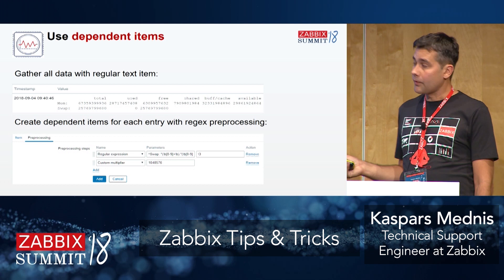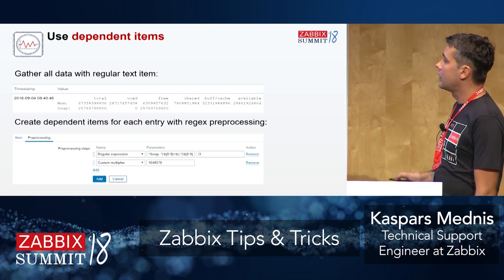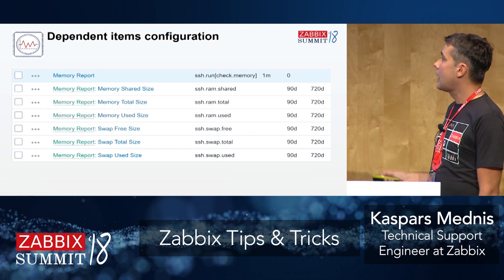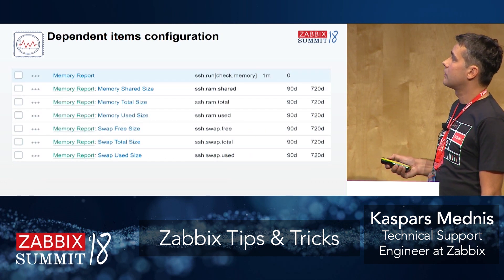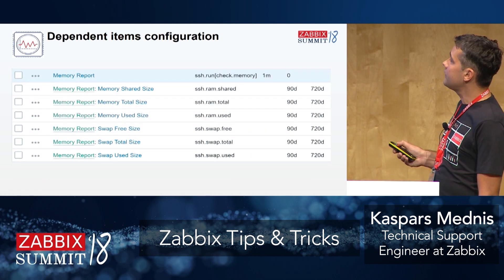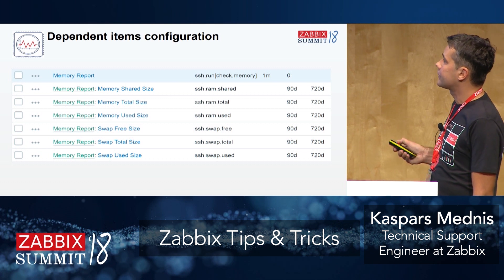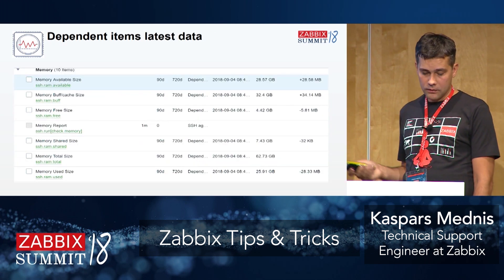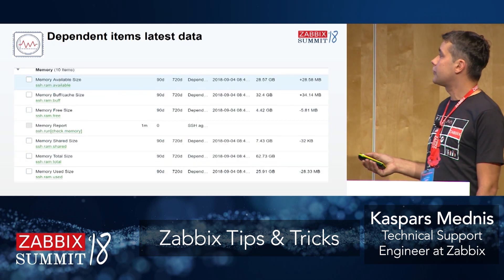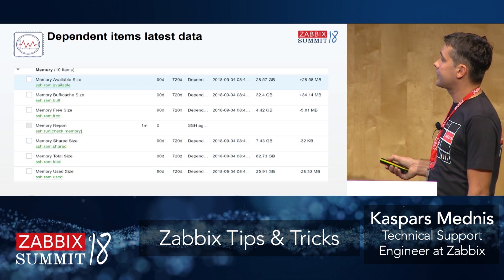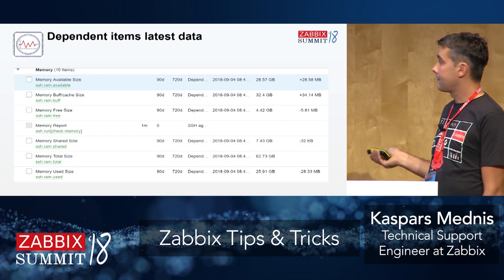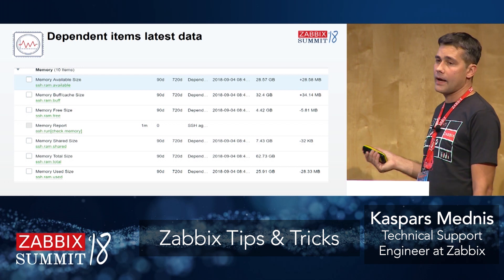Here is an example: you have the memory report as the master item collected every minute with history not stored, and you create six dependent items from it. The latest data for the master item is empty, but here you are getting the real values. You can draw graphs and so on.